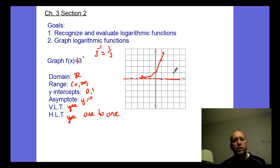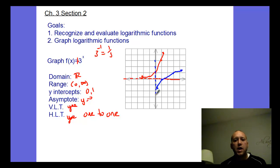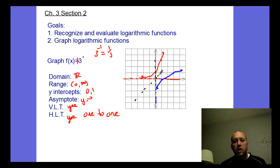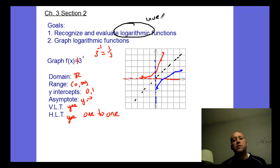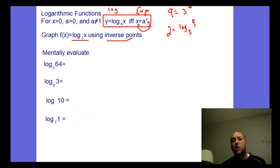(1, 3) becomes (3, 1), and (-1, 1/3) becomes (1/3, -1). So you actually get this curve, and you have a vertical asymptote on the y-axis. These graphs are reflections over the y equals x line because we switch the y and x values — they're inverses. The big thing to realize is that logarithmic functions are just inverse functions of exponential functions.